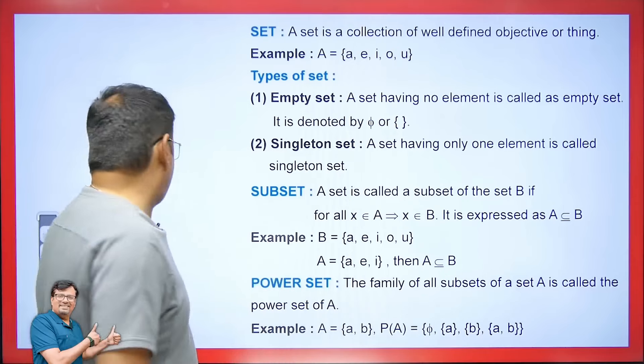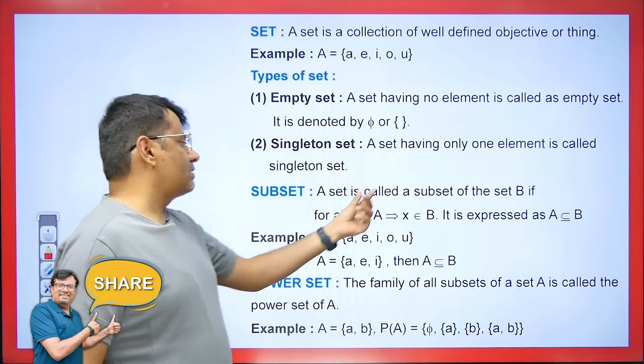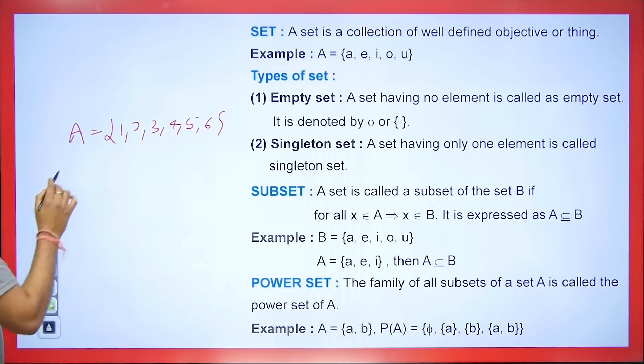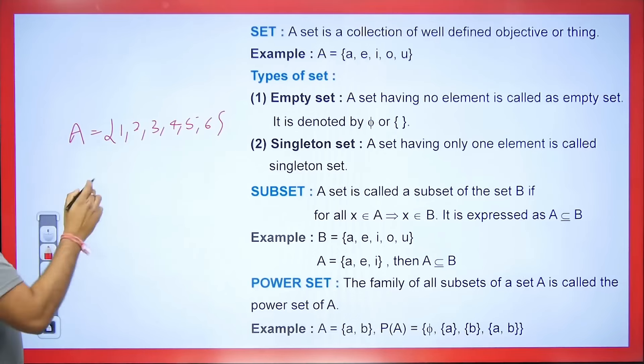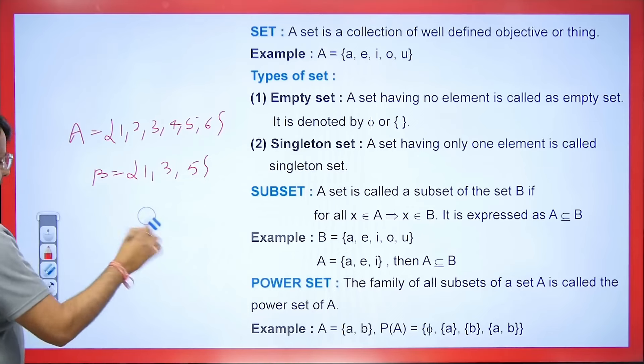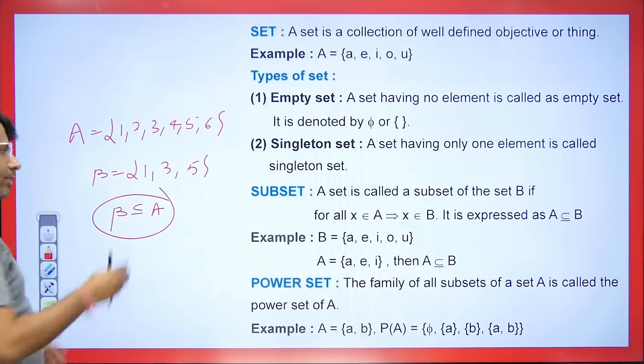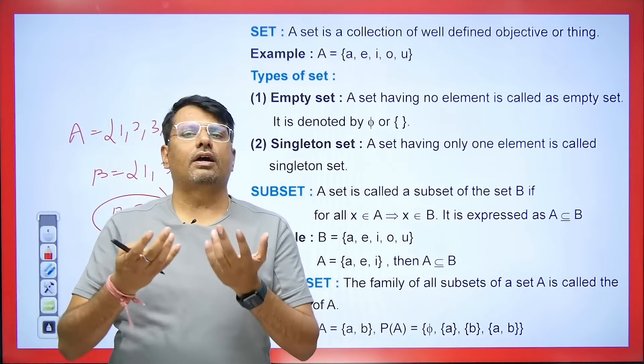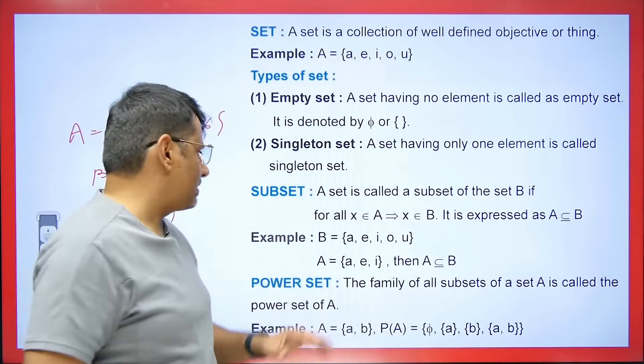Now let's talk about subsets. A set A is called a subset of B if every element x belonging to A also belongs to B — expressed as A ⊆ B. This means A is a smaller set contained inside the larger set B. For example, if we have the set {1, 2, 3, 4, 5, 6} and we pick the subset of odd numbers, we get {1, 3, 5}. You can see that this set B is completely contained in A, so B is a subset of A. Similarly, if B = {a, e, i, o, u} and A = {a, e, i}, then A is a subset of B.